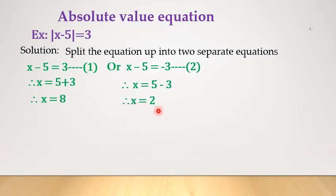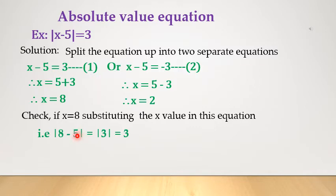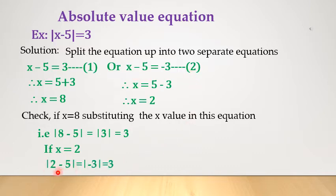Now we will check. If x equals 8, put the x value into the equation: the absolute value of 8 minus 5 equals the absolute value of 3, which is 3. If x equals 2, put the x value into the equation: the absolute value of 2 minus 5 equals the absolute value of minus 3, which equals 3. In both cases we get the same answer.